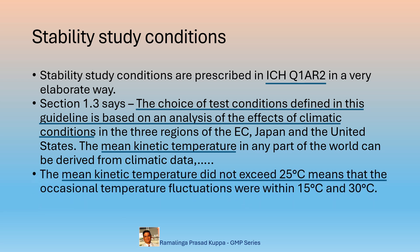The mean kinetic temperature did not exceed 25 degrees Celsius means that the occasional temperature fluctuations were within 15 degrees Celsius and 30 degrees Celsius. So even if there were fluctuations occasionally between 15 and 30 degrees Celsius, the calculated mean kinetic temperature should not exceed 25 degrees Celsius. Occasional fluctuations are only permissible throughout the study. Stored at 25 degrees Celsius with a range of 15 to 30 degrees Celsius should not be understood that the product can be stored at any absolute temperature between 15 and 30 degrees. The permissible temperature excursions are mean kinetic temperatures and not absolute temperatures.